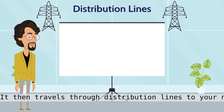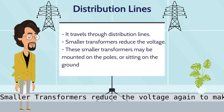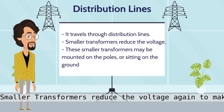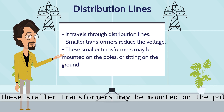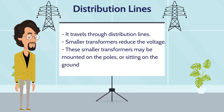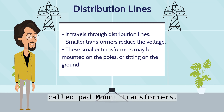It then travels through distribution lines to your neighborhood. Smaller transformers reduce the voltage again to make the power safe to use in our homes. These smaller transformers may be mounted on the poles, or sitting on the ground — they are the big green boxes called pad mount transformers.